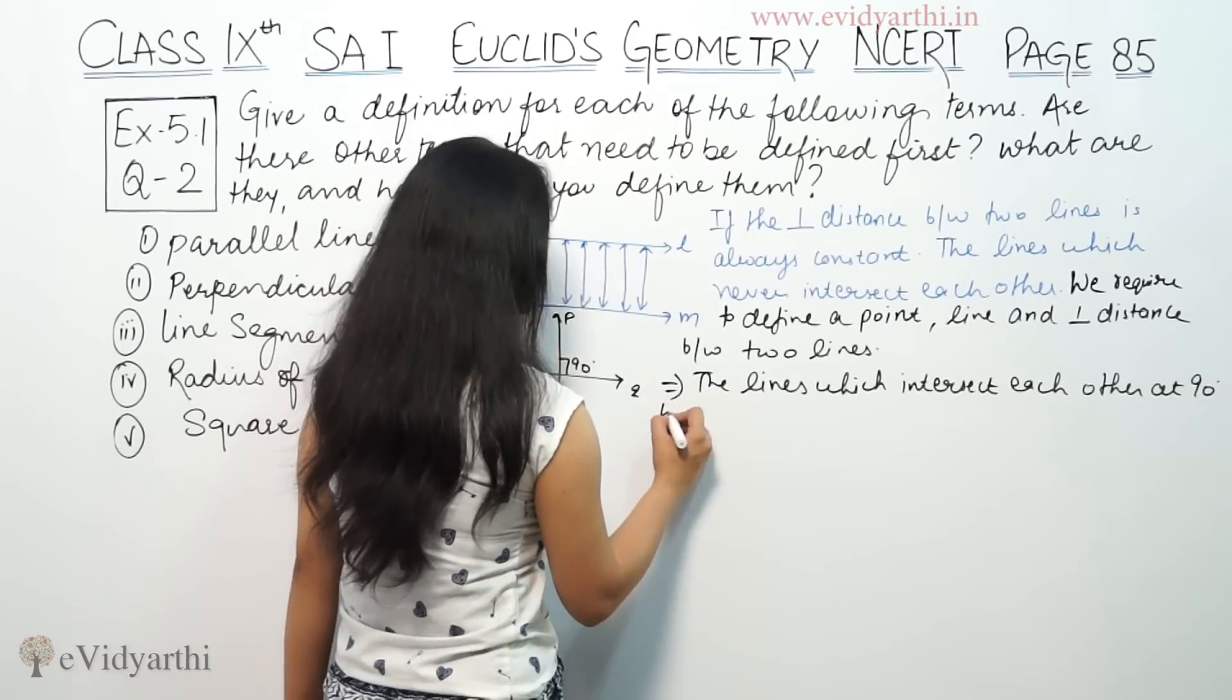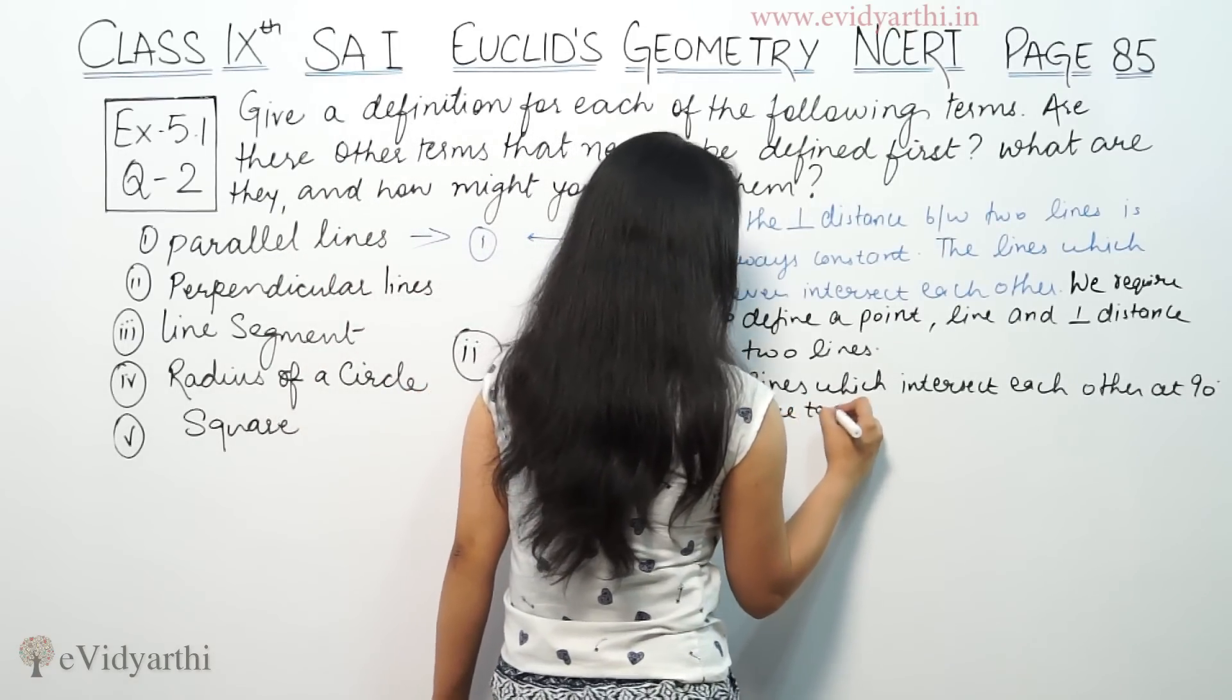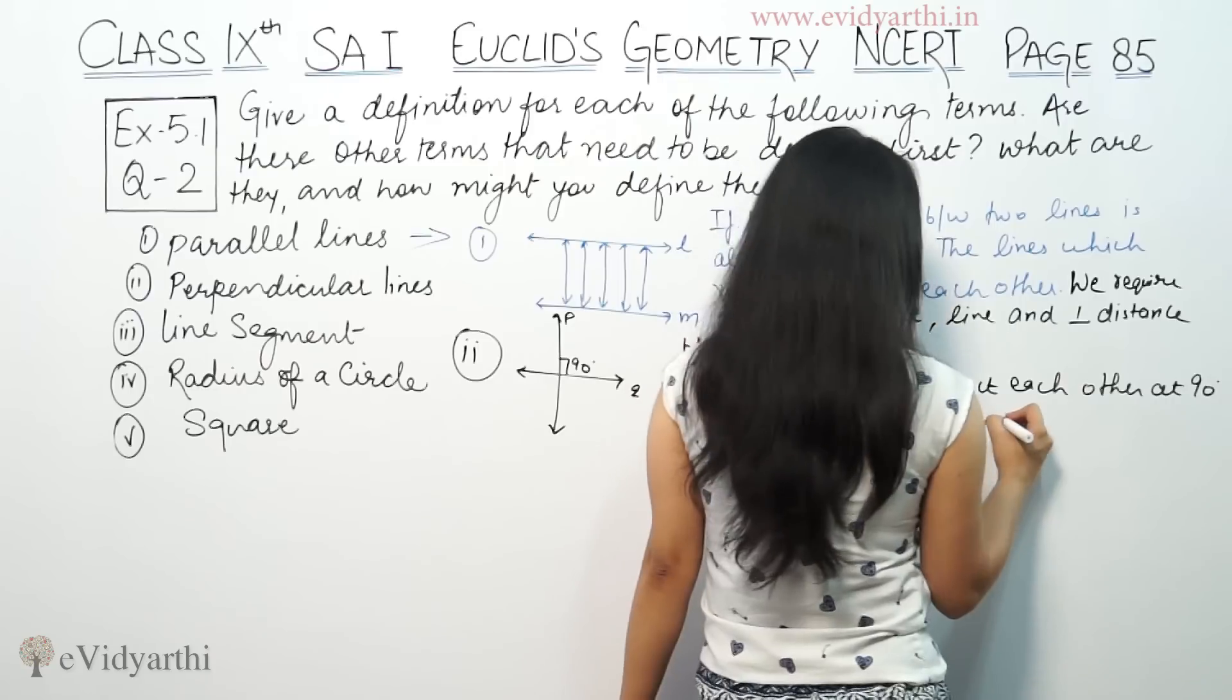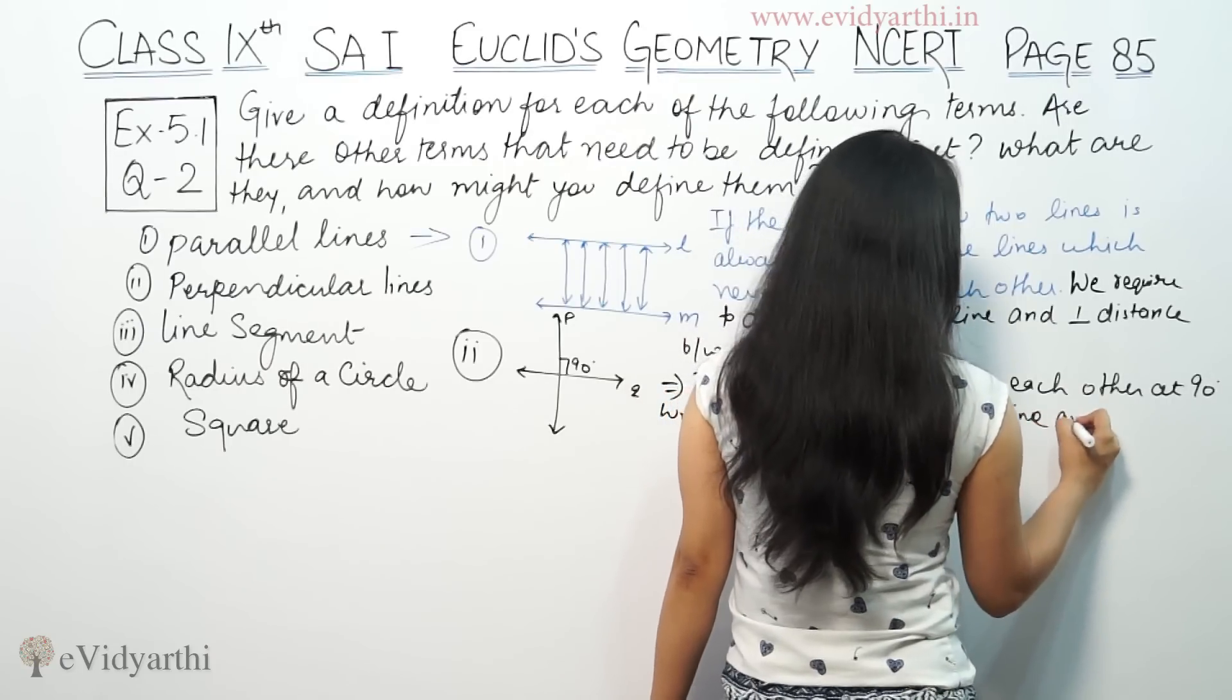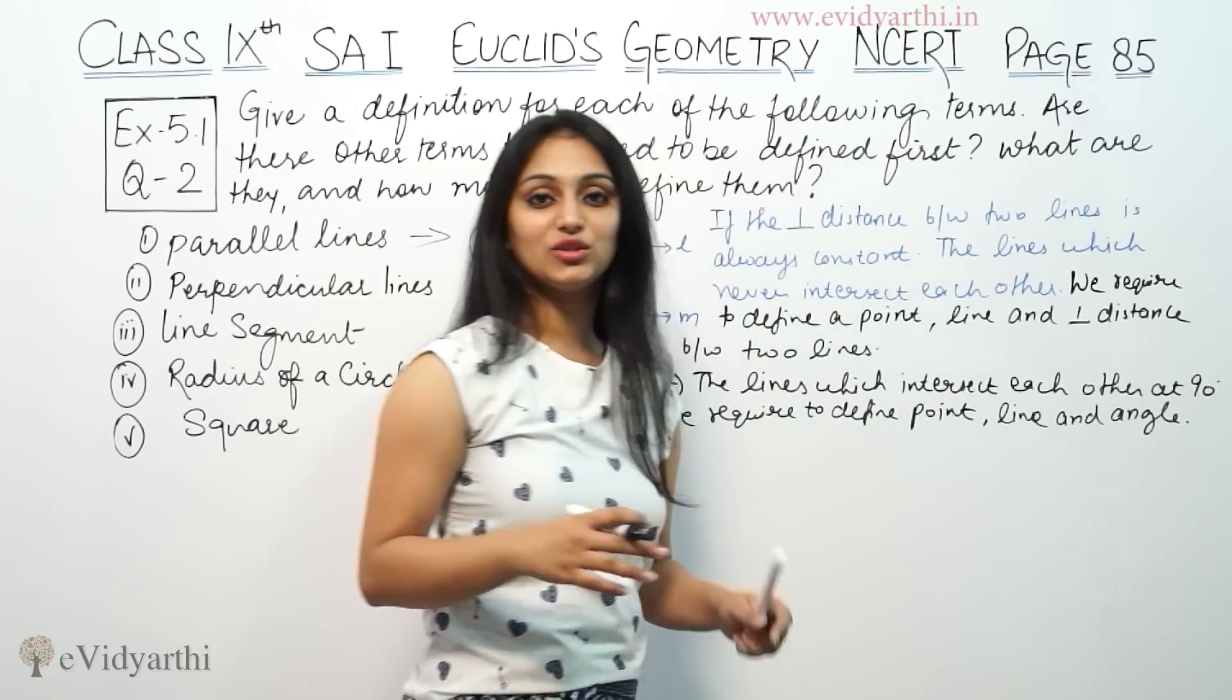So we have to define a point, line, and angle. What is point? What is line? What is angle?